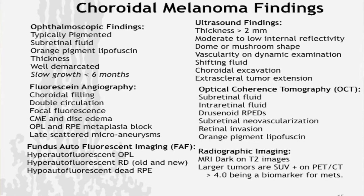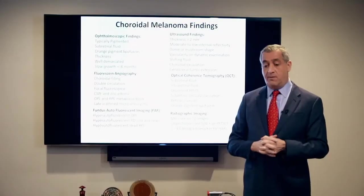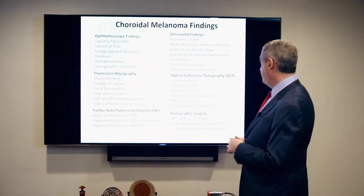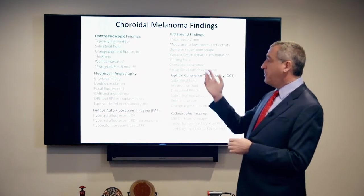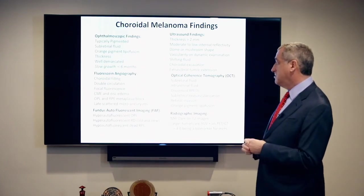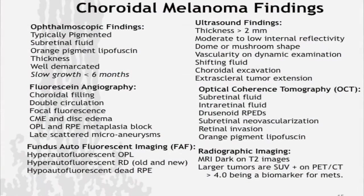Those were the most common tools to evaluate choroidal tumors. I sat down and tried to figure out the most common findings of all the tests we can currently do for choroidal melanoma. We now have ophthalmoscopic findings, thickness, fluorescein angiographic findings, fundus autofluorescent imaging findings, ultrasonographic findings, OCT findings — we didn't have OCT back in the day — and even radiographic findings like MRI and PET-CT.